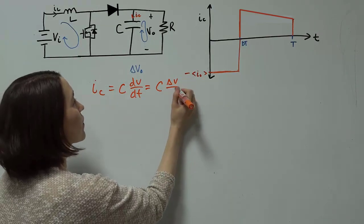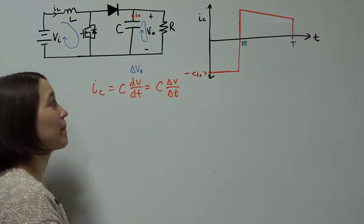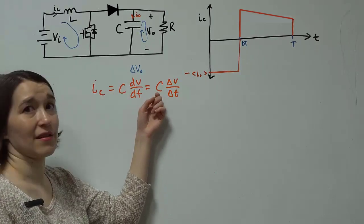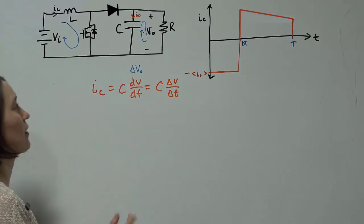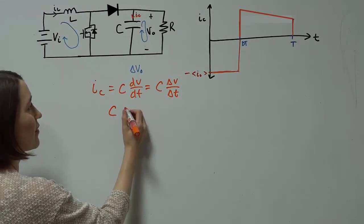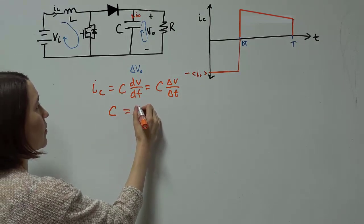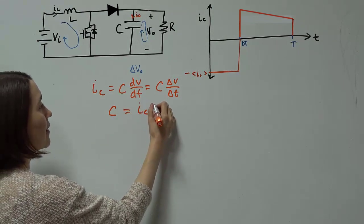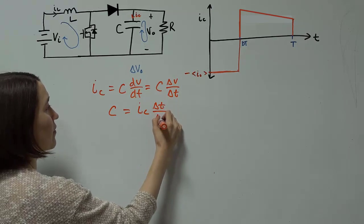So we can see delta V, the change in voltage, over delta T, the change in time. And we want to calculate the capacitance value. So let's move this equation around.